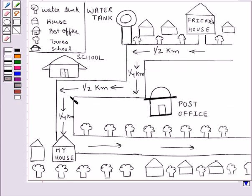So this is the map that we have drawn. As you can see, this is the friend's house, and this is my house. Now I have to give instructions to my friend to reach my house without any difficulty.